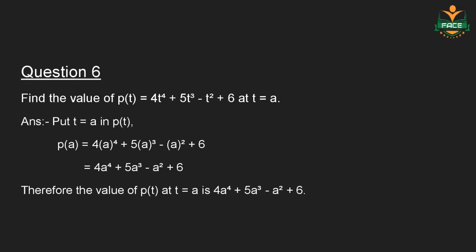Question number 6: Find the value of P(t) is equal to 4t to the 4th plus 5t cubed minus t squared plus 6 at t equal to a. Put t equal to a in P(t). P(a) is equal to 4 into a to the 4th plus 5 into a cubed minus a squared plus 6. Therefore, the value of P(t) at t equal to a is 4a to the 4th plus 5a cubed minus a squared plus 6.